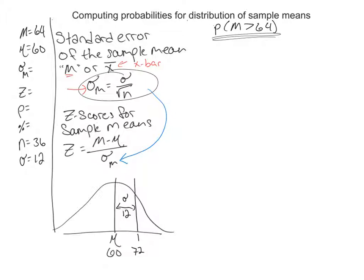So we asked if we grab 36 people and they take part in a study, and at the end of the study they have an average score of 64. What's the probability of that happening just by chance or whatever?